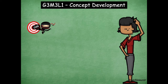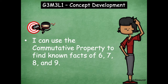Hey boys and girls, it's Mrs. Walker. Today we're going to use the commutative property to help us solve facts for some brand new facts. Our learning goal for today says: I can use the commutative property to find known facts of six, seven, eight, and nine. These are all new units of numbers that we're going to be able to multiply as we get into this module.